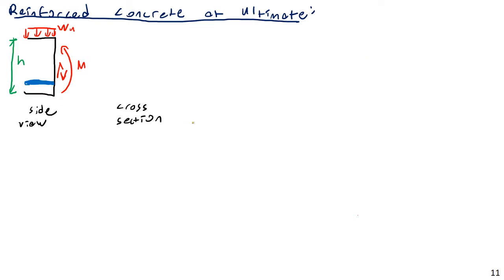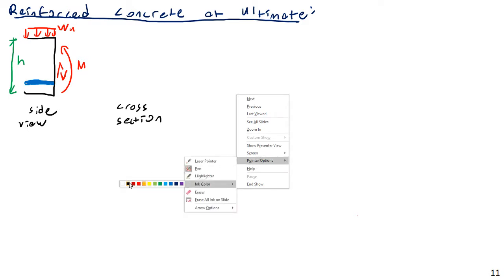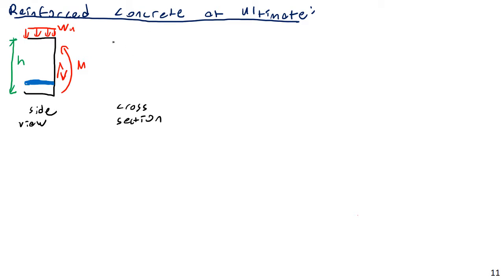This assumes we're designing for positive bending only. Sometimes, especially for continuous beams, you'll have the same beam designed to withstand both positive and negative moment. In that case you'd end up with reinforcement both up here and down here — we might get to that later in the semester. For now we'll stick with positive moment design only.